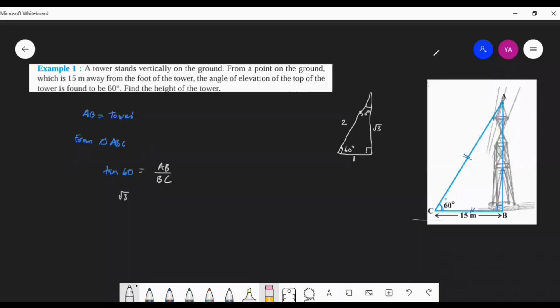So we can write here √3 instead of tan 60°. AB we don't know, so simply write AB. And BC we know, that is 15—given. So simply take 15 to the left side. You will get AB is equal to 15√3.